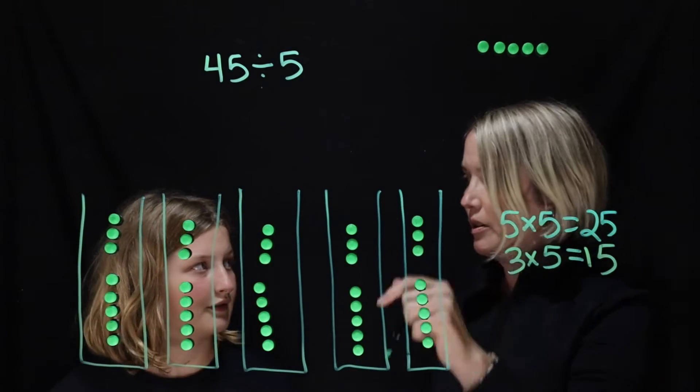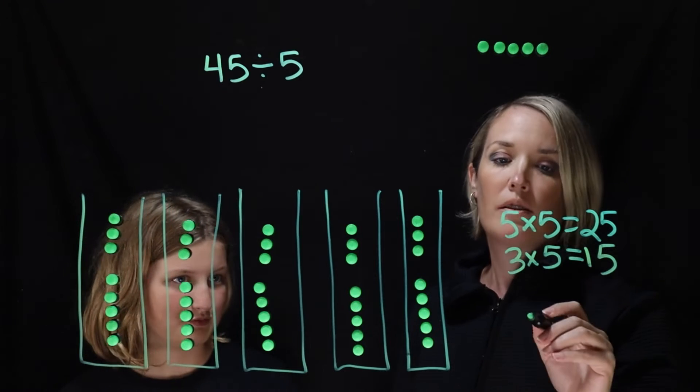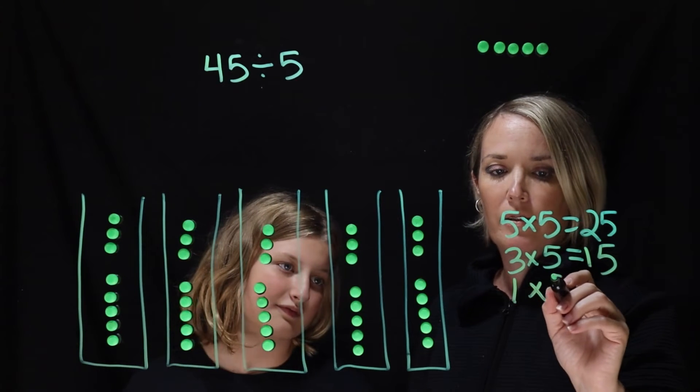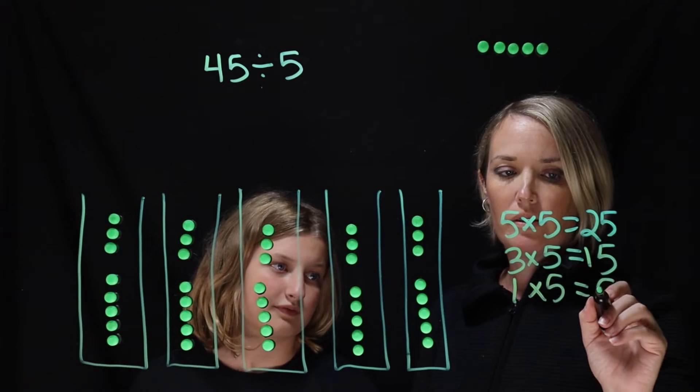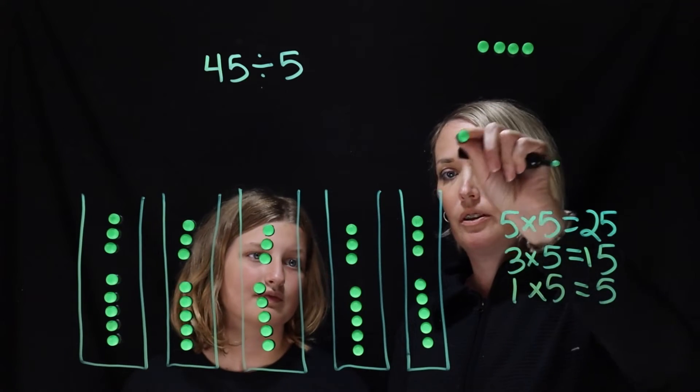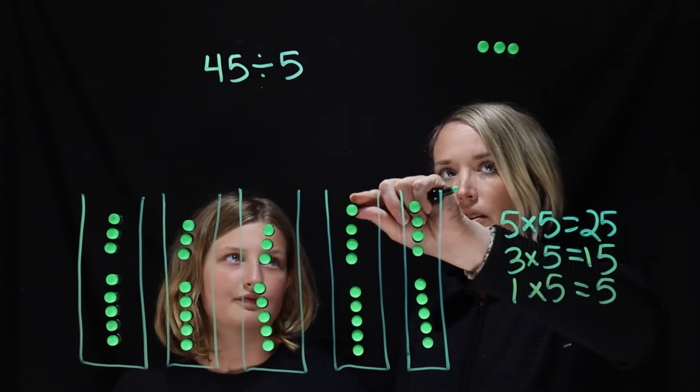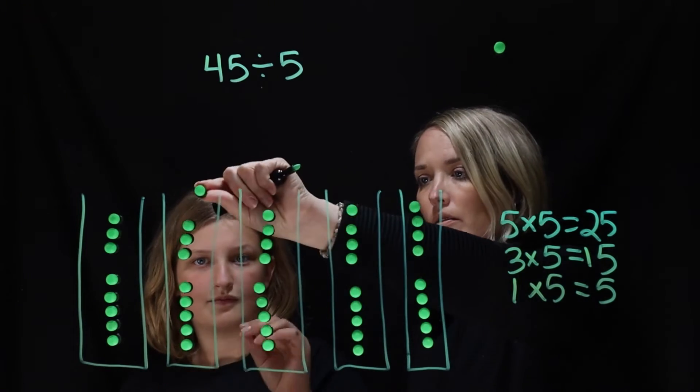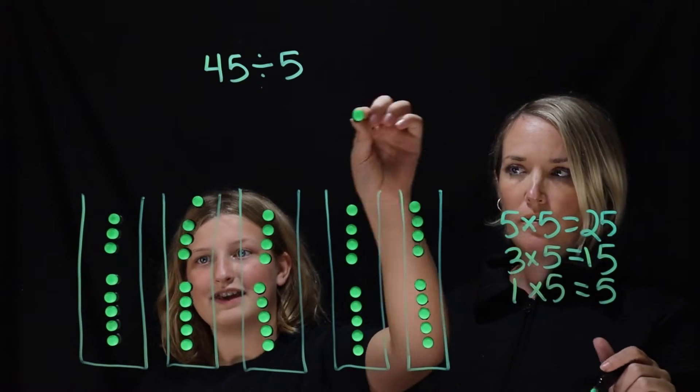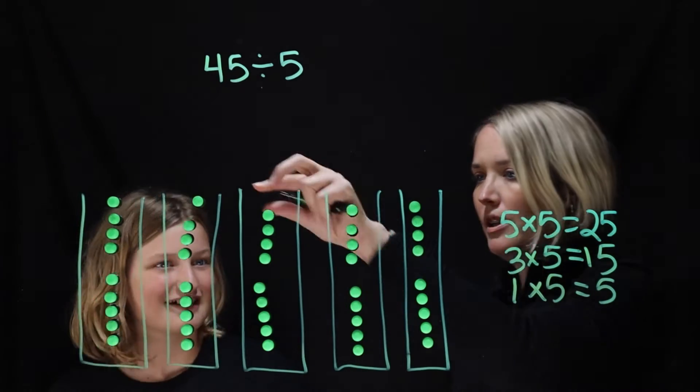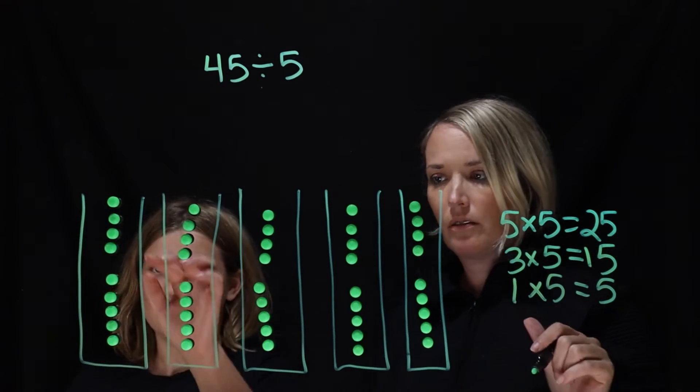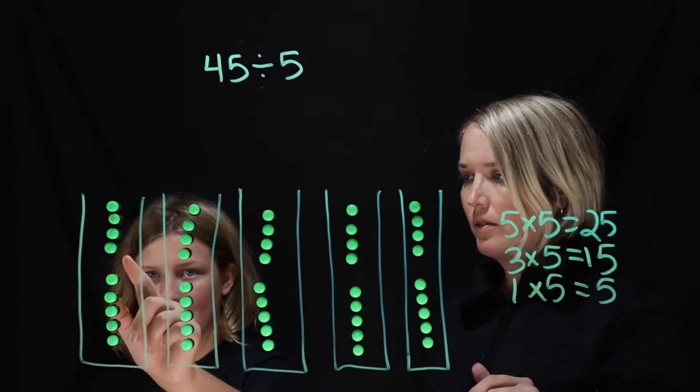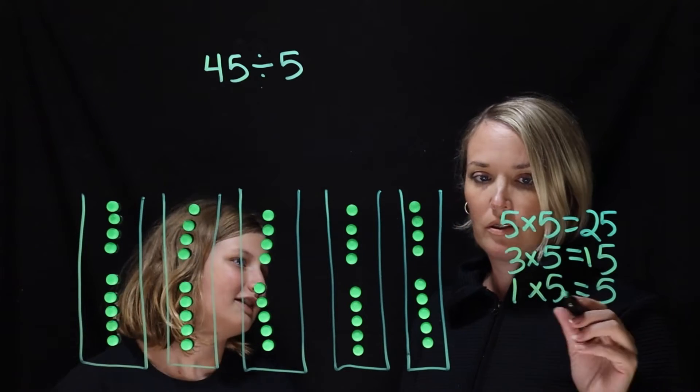So how many more are you going to put in each bag? I'm going to put 1 more. Okay. So 1 group of 5 is equal to 5. So let's go ahead and do it. We'll let you do the last one. Yay. So how many is in each bag? I think 5, 8, 9.